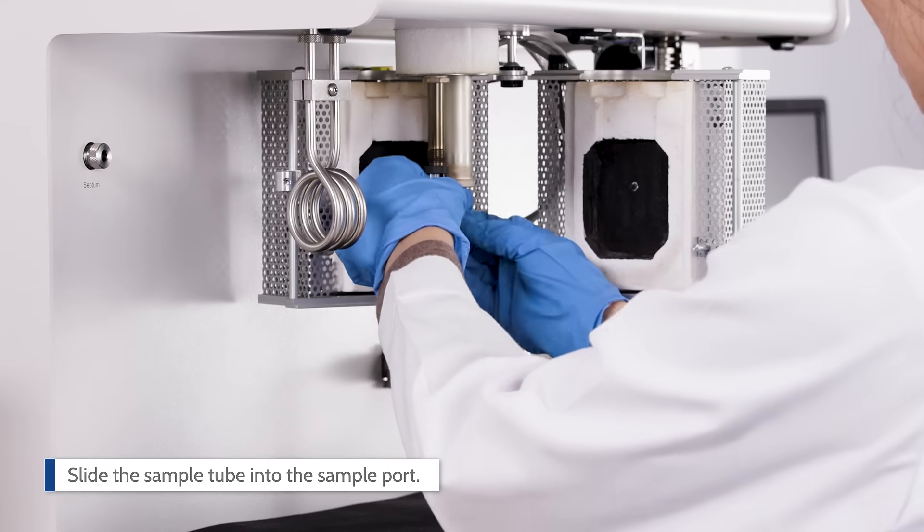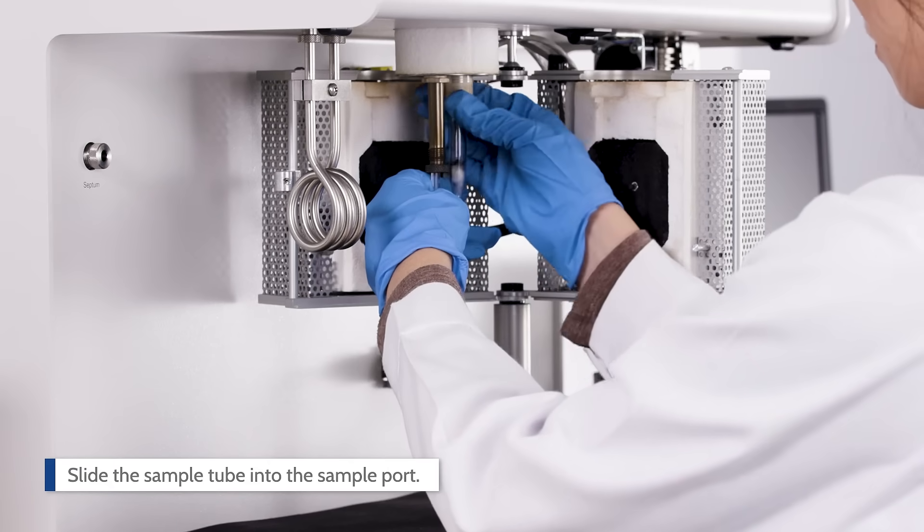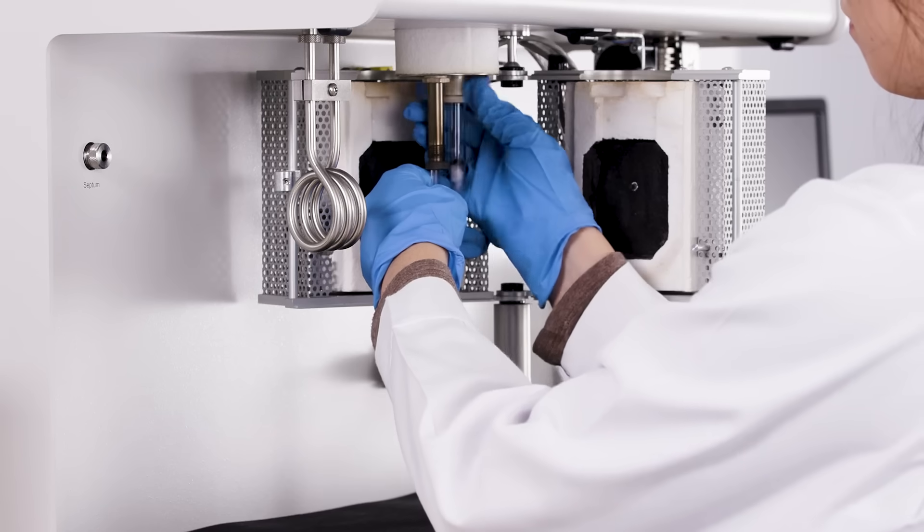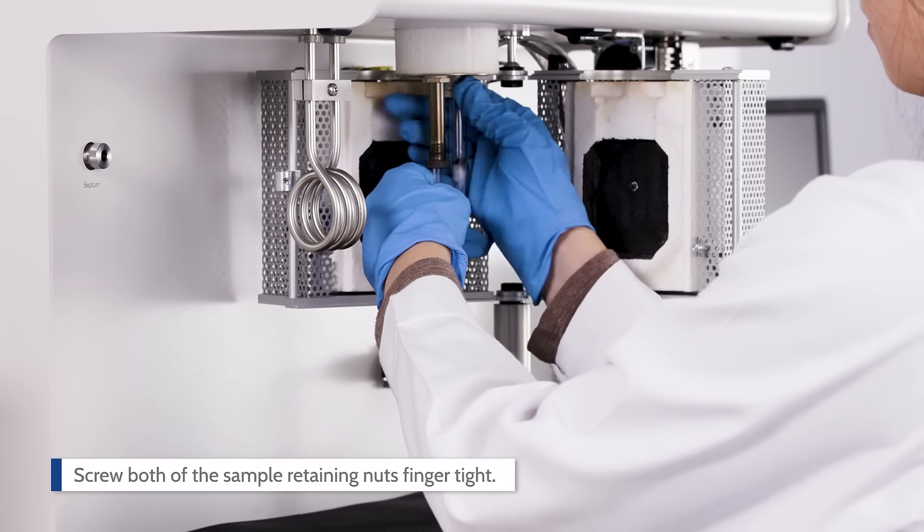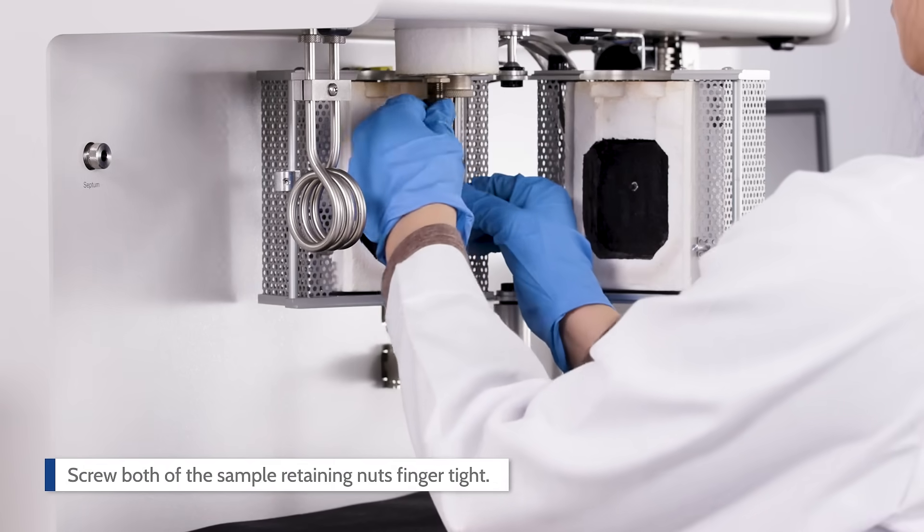Slide the sample tube into the sample port until it comes to a stop. The thermocouple should sit inside of the inlet of the tube. Screw both of the sample retaining nuts until they are finger tight.